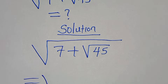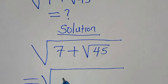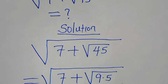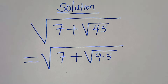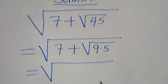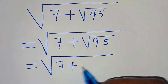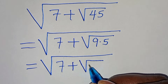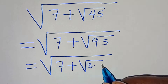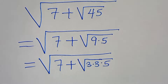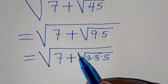We can express the square root of 45 — this is the same thing as the square root of 9 multiplied by 5, which we can express further as the square root of 7 plus the square root of 3 times 3 times 5.